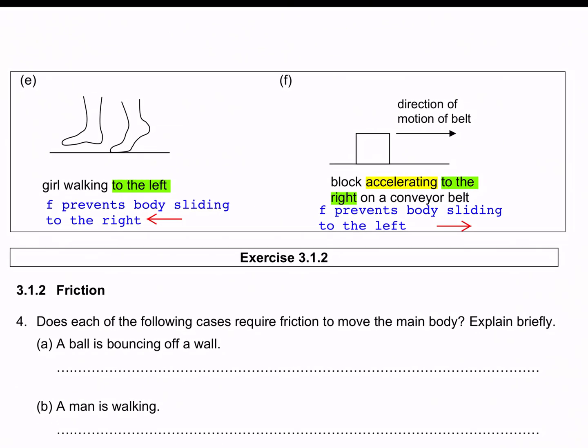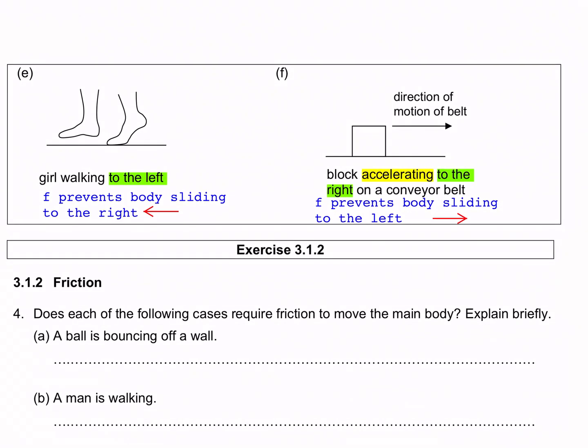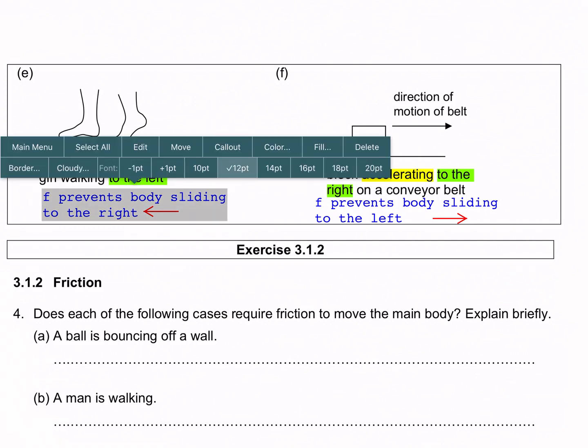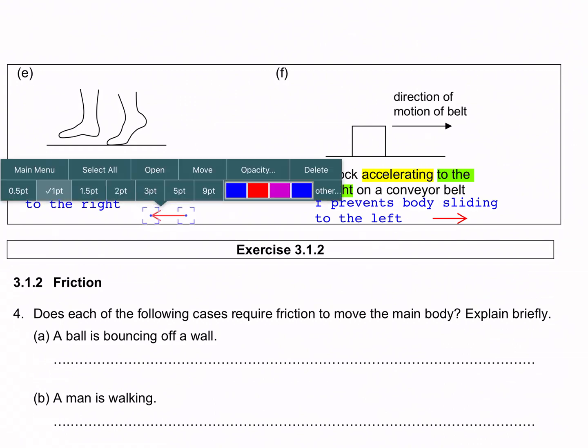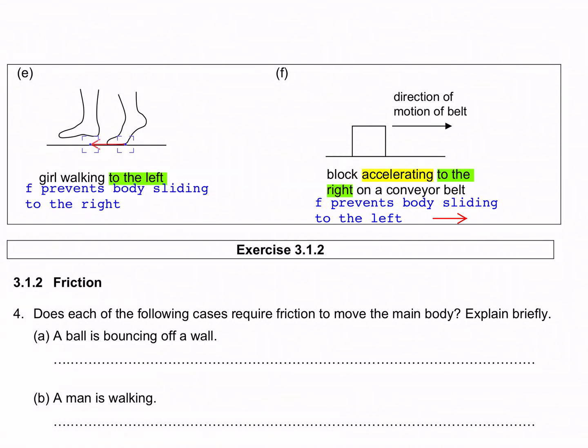Example e: A girl is walking to the left. For her foot that's touching the ground, if there was no friction, her foot would slide to the right. So friction has to prevent the foot from sliding to the right by acting to the left.